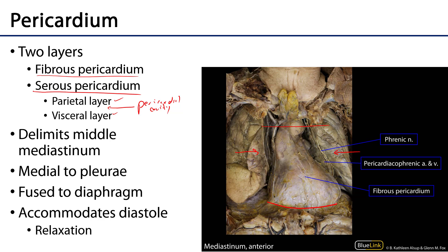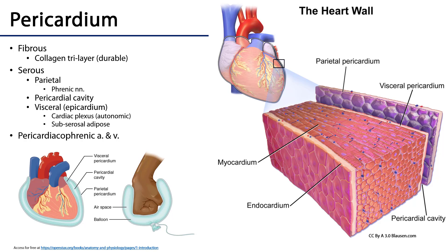The pericardium accommodates diastole, or the relaxation of the heart. As blood is all pressure driven, the heart through relaxation is able to move blood within it. The fibrous pericardium is a collagen tri-layer. Collagen is a very durable, very inelastic protein, and this tri-layer is woven at right angles to itself — a very tough, inelastic layer that represents the total volume the heart can hope to expand into.